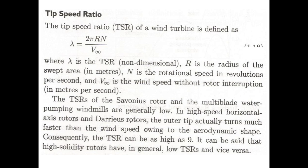For high-speed horizontal axis grid-tied rotors and the Darrieus rotor — which is a vertical axis wind turbine operating on lift force principles of horizontal axis turbines — the outer tip turns faster than the wind speed due to its aerodynamic shape. Consequently, the TSR can be as high as 9. In general, higher rotor solidity corresponds to a lower tip speed ratio, and vice versa.